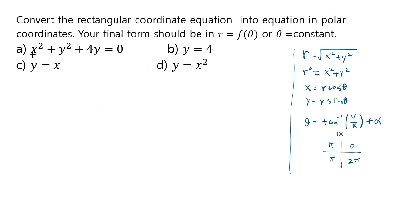So if you have x squared plus y squared plus four y equals zero, you can rewrite x squared plus y squared as r squared, whereas y is r sine theta, so you get that.